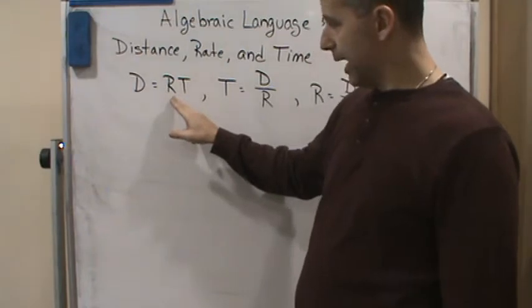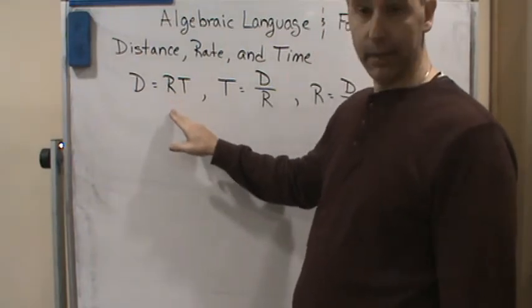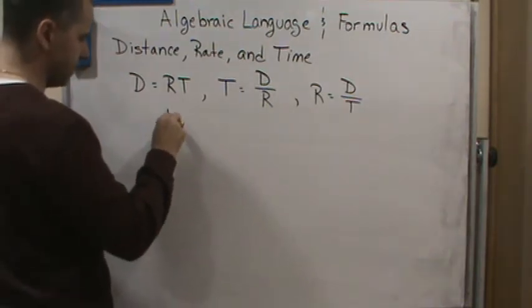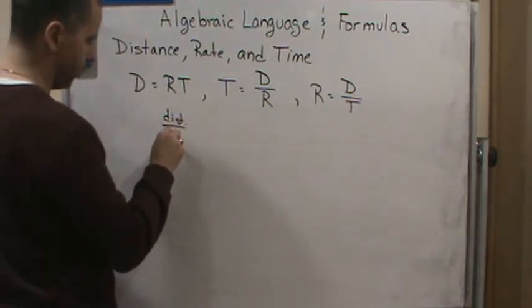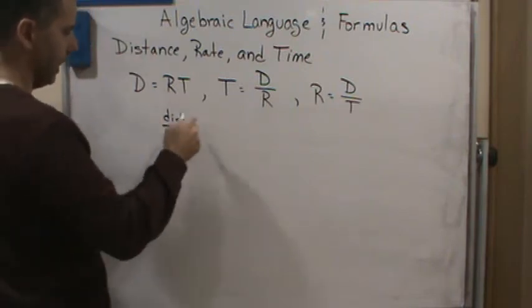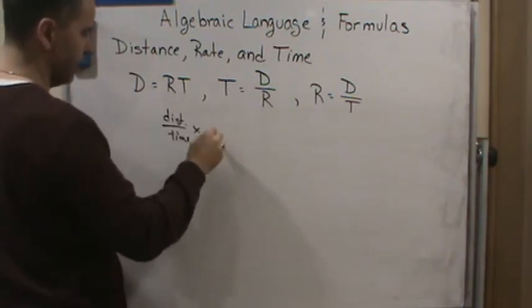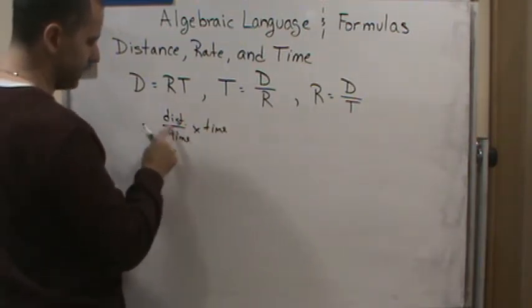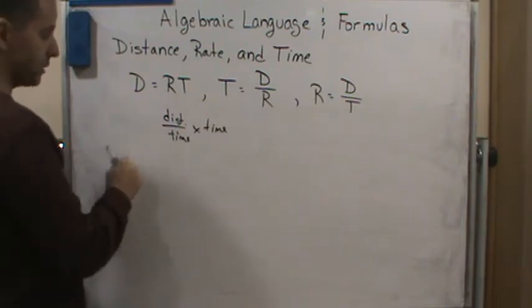Rate is given by what? Distance per time. So think about the way this works. This is distance per time. That's rate. Times time. So these units are going to cancel out and you get distance. So it makes perfect sense.